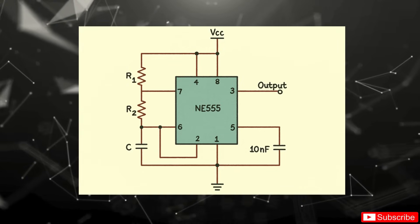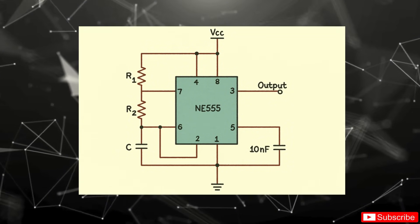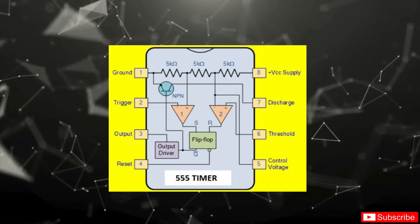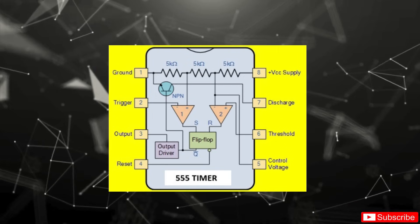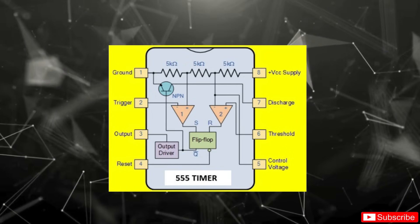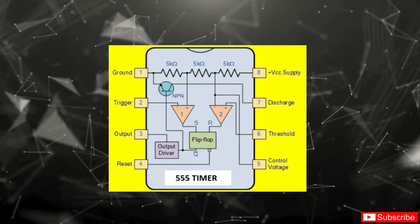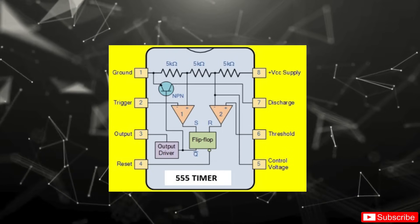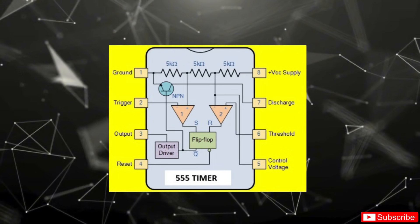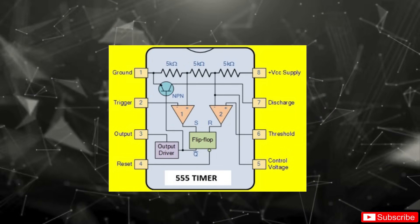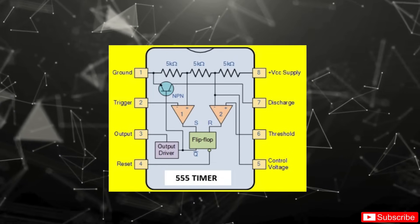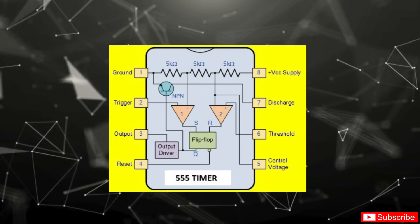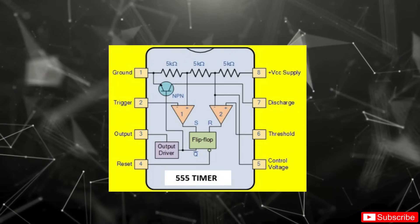Inside the 555 timer, things get interesting. It's built from two voltage comparators, an SR latch, a discharge transistor, and an output stage. When the voltage on C1 drops below one-third of VCC, the lower comparator sets the latch. This drives the output high and turns off the discharge transistor, allowing the capacitor to begin charging again. As soon as C1's voltage rises above two-thirds of VCC, the upper comparator resets the latch. This switches the output low and turns on the discharge transistor, which dumps the capacitor's charge to ground. This latch holds its state until the next comparator event, producing a clean square wave output.